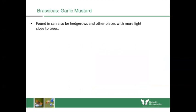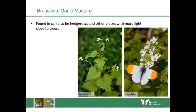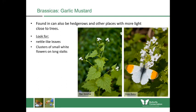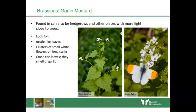Starting with the brassicas, garlic mustard is one of the most important plants for white butterfly species. You can find it in woodlands, hedgerows and lighter places close to trees. To identify it, look for nettle-like leaves on a quite upright stalk growing much taller than nettles. It has clusters of small white flowers on long stalks, and if you crush the leaves they smell of garlic — which is how it gets its name, though it's not related to normal garlic at all.